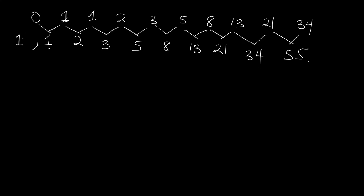Looking at the pattern, the first number is F0 and the next is F1. If you add F0 plus F1 it becomes the next number. In programming, if you assign a value to a variable, you can reassign a value to that variable and the current value will override the old value.